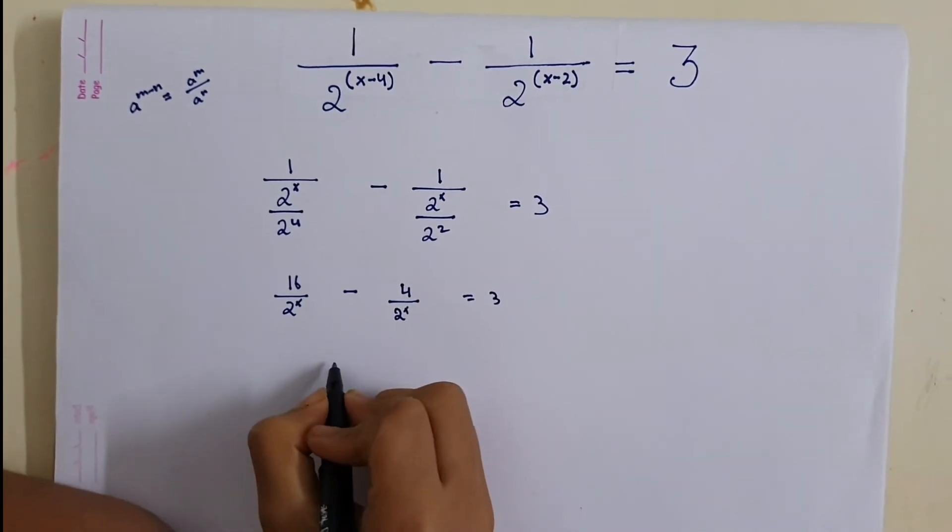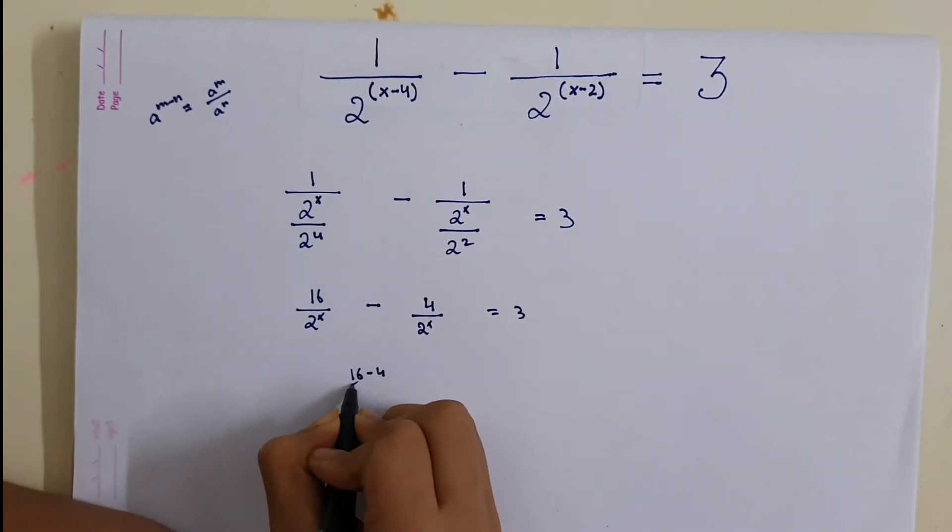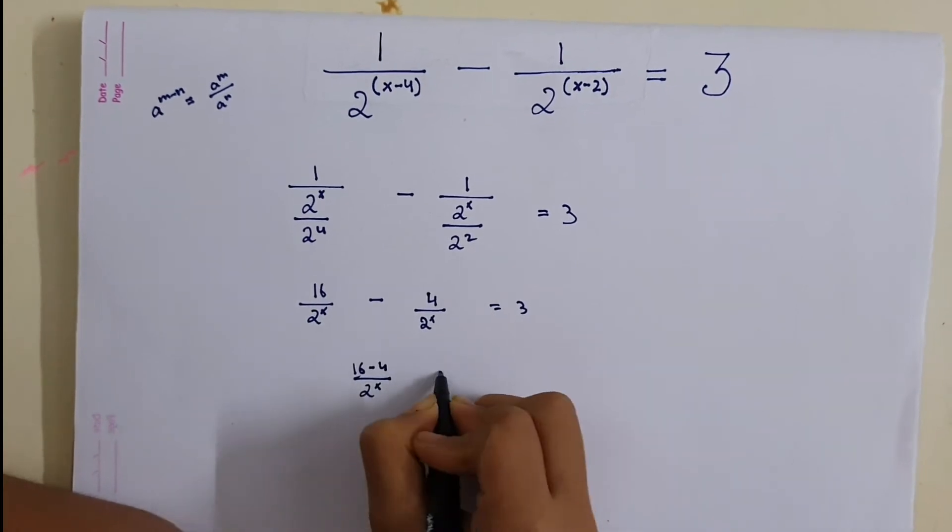So the denominators are same. So we can also write it as 16 minus 4 by 2 raised to power x equals to 3.